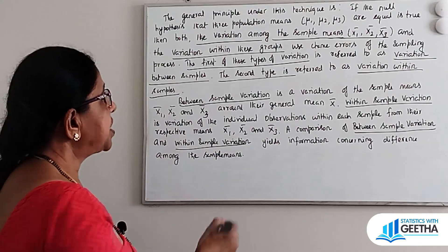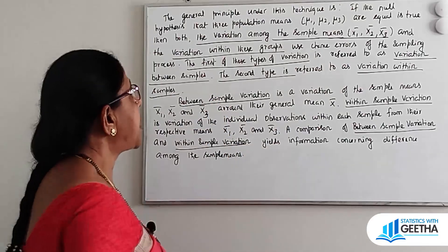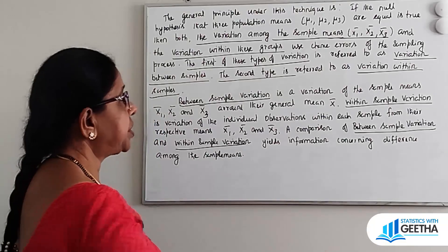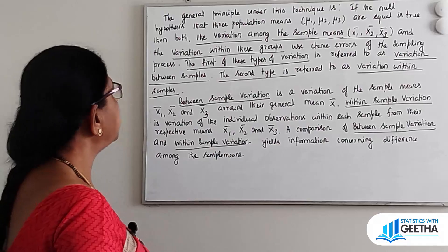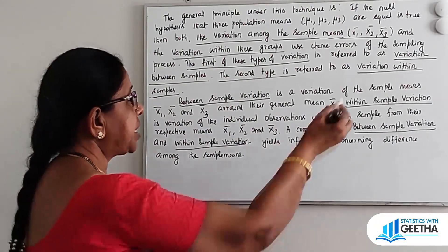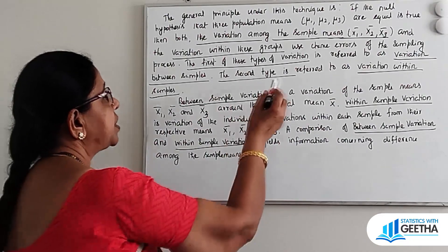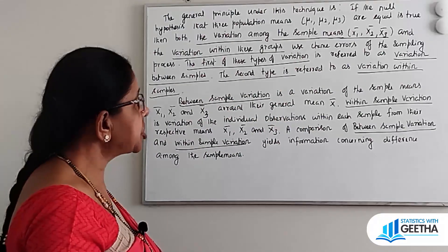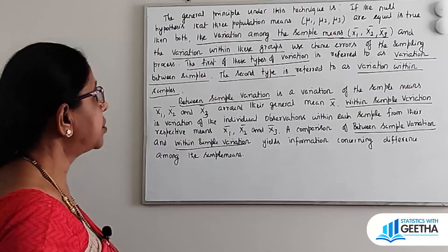In ANOVA, the first type of variation is referred to as Variation Between Samples — that is the variation among the sample means. The second type is referred to as Variation Within Samples — variation within these groups. So there are two types of variation: one is Variation Between Samples, and the second is Variation Within Samples.